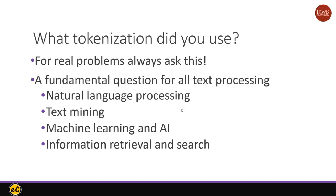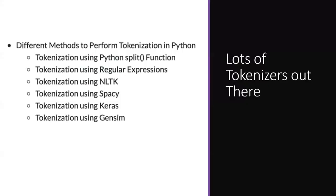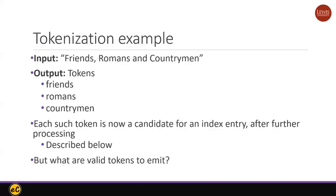Basically, you have a source file in a certain language, then you use a Lexer to create tokens, and the tokens feed to the parser. The parser generates a parsing tree. The symbol table analyzer also feeds into the parser. These are the stages for the compiler. You may use different tools such as Natural Language Toolkit, spaCy, Keras, or Gensim for tokenization purposes in AI.